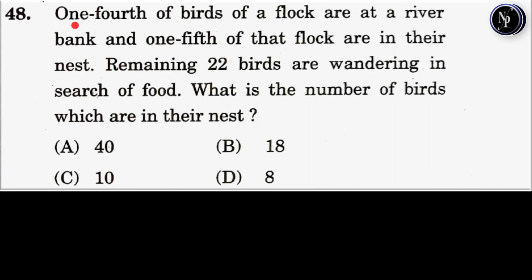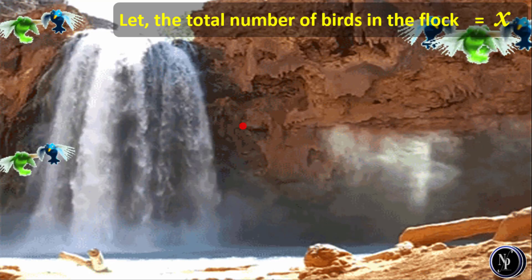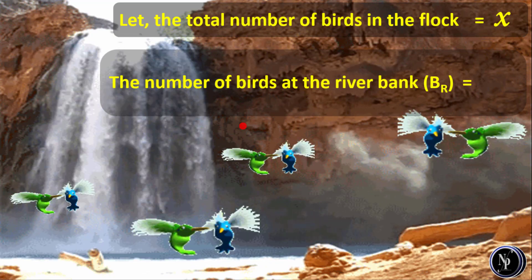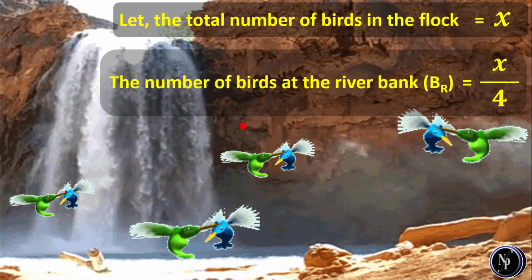Question number 48. One-fourth of birds of a flock are at a river bank and one-fifth of that flock are in their nest. Remaining 22 birds are wandering in search of food. What is the number of birds which are in their nest? Let the total number of birds in the flock be equal to x. The number of birds at the river bank BR is equal to x divided by 4, which is given in the question.